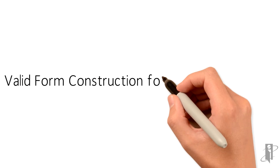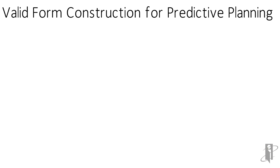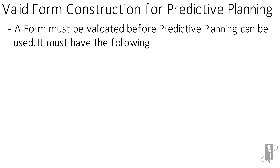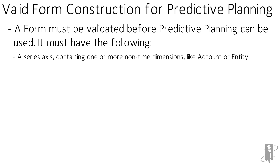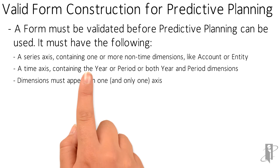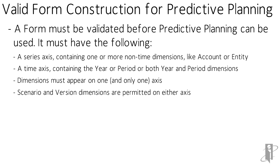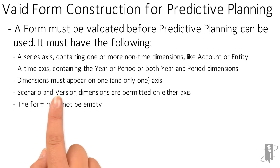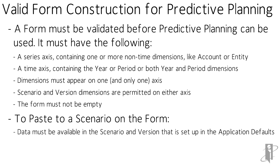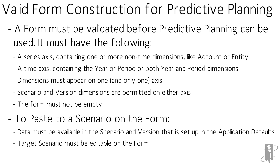To describe what a valid form is: it must have a series axis containing one or more non-time dimensions like account or entity. I'm going to be using account, scenario, and version, and then a time axis which is going to have period and years. You also have to make sure that your scenario and version is set up for the application defaults and it also has to be editable on the form for anything to work.